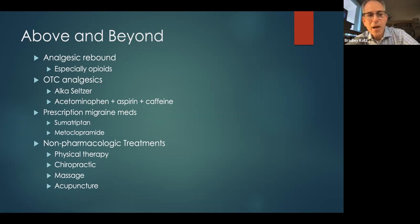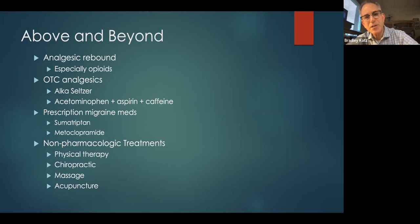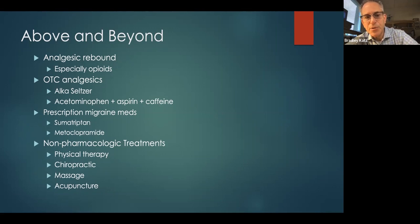You can also use prescription migraine medications. Sumatriptan has been around a long time; it's really safe. The only real serious contraindication is ischemic cardiac disease. You can give metoclopramide, which in addition to treating nausea supports gastric motility and can also help resolve the migraine.